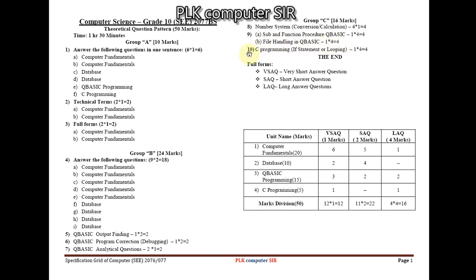Question 10 is C programming. There will be two questions but you attempt only one: one from if-statement and one from looping. Each is 4 marks, so 1 × 4 = 4 marks. In this way Group C totals 4 + 4 + 4 + 4 = 16 marks.